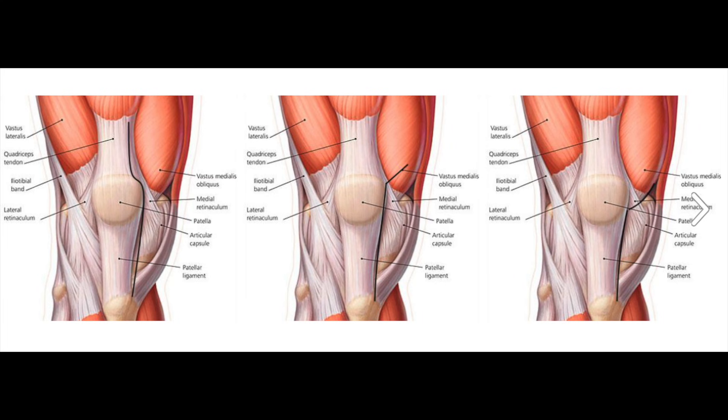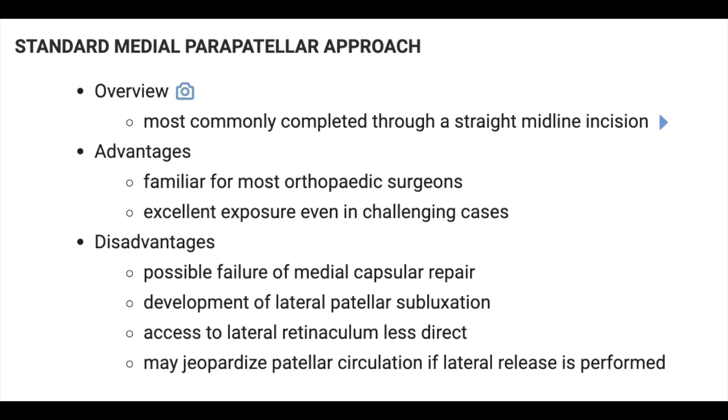When we talk about approaches to the knee for total knee replacement, there are three common approaches: the median parapatellar arthrotomy, the mid-vastus approach, and the sub-vastus approach. The median parapatellar arthrotomy is the most commonly used, the most utilitarian. In complex cases, we can do things like quad snips and VY turn downs to expose more of the knee if needed, making it the workhorse when working around the knee.